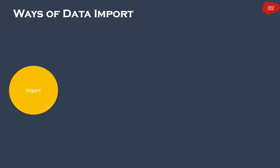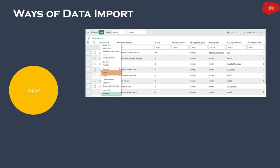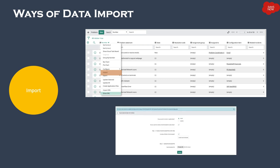Another way to import data is the Import option on the same list context menu. This uses the functionality of import sets and transform maps, which is the core feature for importing data into ServiceNow. When you click on Import, a new screen lets you upload an Excel file. You can also download a template, fill in the data, and upload it back.